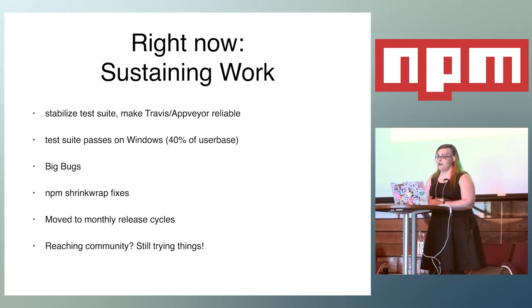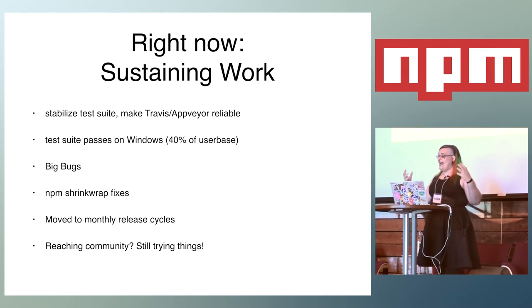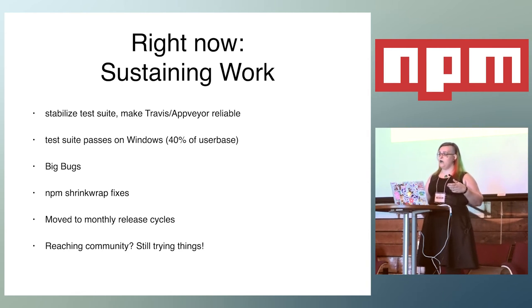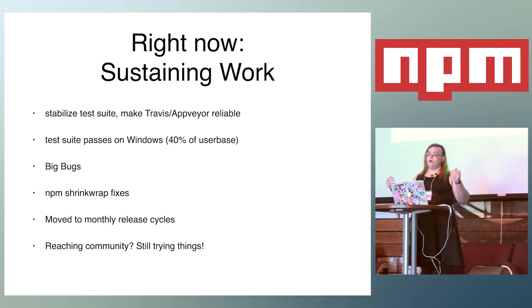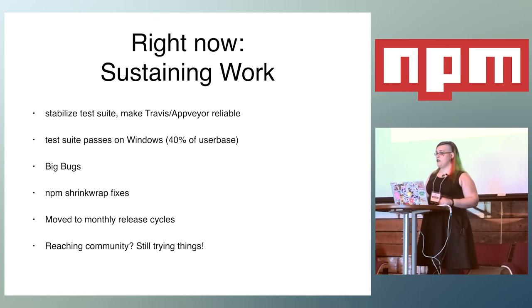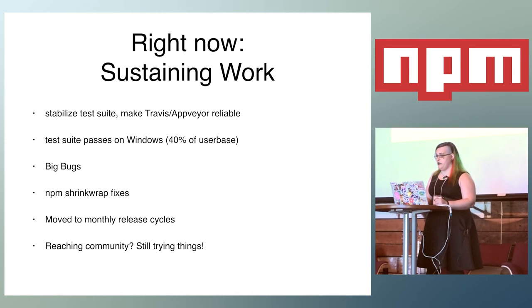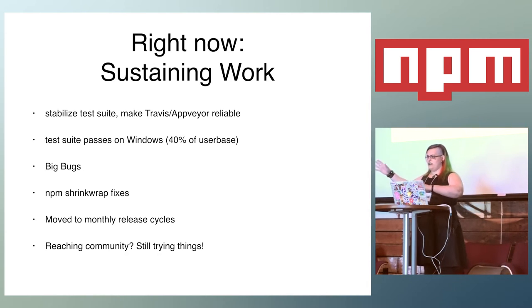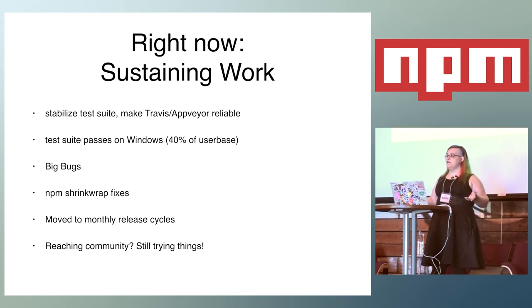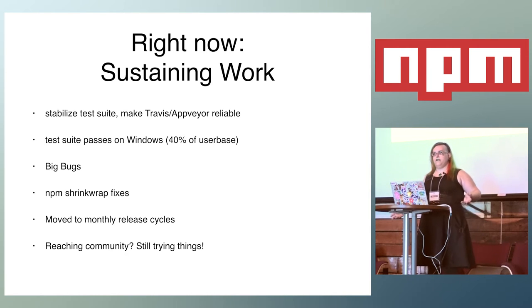That also involves a lot of shrink wrap fixes. Shrink wrap is an ongoing thing for us — we're trying to make sure it works really well as it is right now. There's a lot of talk going back and forth in the community and internally about what to do with shrink wrap going forward, but for now, making sure what we have works well and reliably as designed is the main goal. We've also moved from a weekly release cycle to a monthly release cycle, so we have more time to do our work instead of doing our releases.